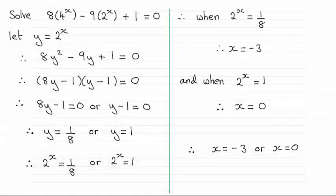Hi then. So for this question, we're asked to solve 8 times 4 to the power x minus 9 times 2 to the power x plus 1 equals 0. The answer turns out to be x is minus 3 or x is 0.